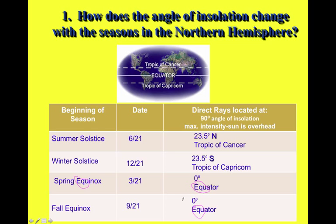The fall equinox is also sometimes referred to as the autumnal equinox, which has the word autumn in it. The spring equinox is also referred to as the vernal equinox — those are alternate names for those two season beginnings. I've simplified the dates and kept each at the 21st, but sometimes you'll see the 20th, 22nd, or even 23rd. The 21st is a good way to remember, but don't be thrown off if a question shows a date within a day or so.